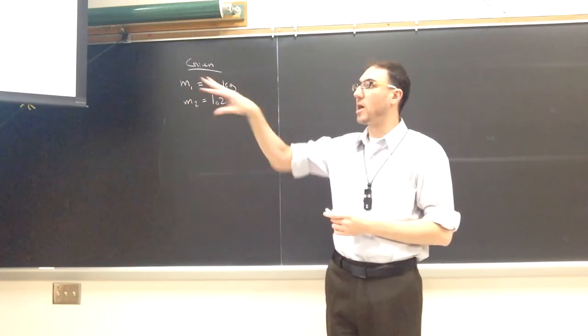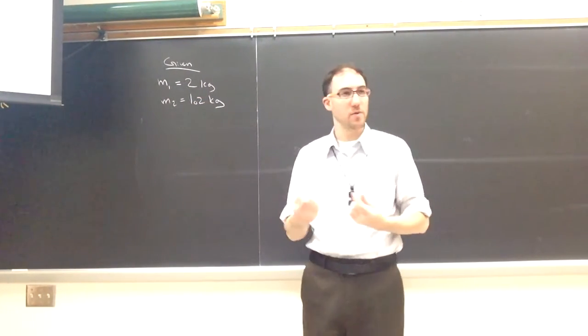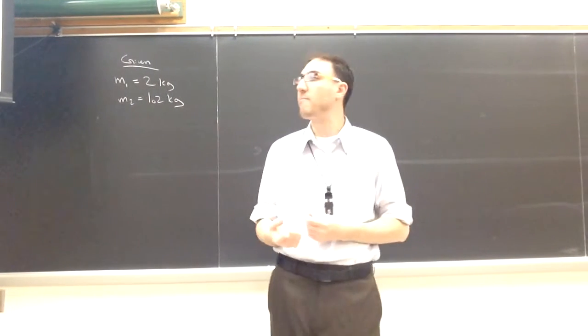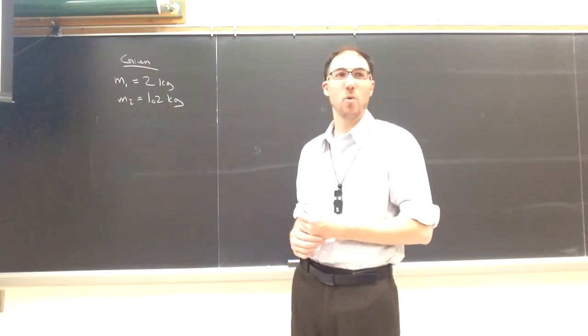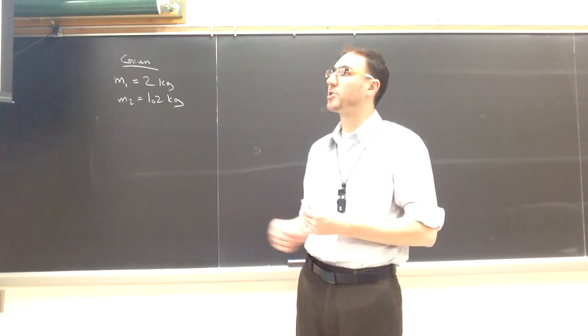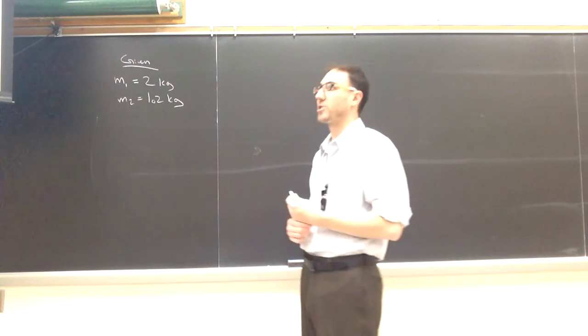We're given in the lower diagram where the center of gravity or the center of mass of each is located. So the forearm is kind of biased towards the hand, and the beverage container is just at the center of the beverage container there.